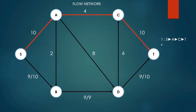Next, we update the flow of each edge in our path in the flow network. For each edge in the path, we represent each edge as the current flow in comparison to the maximum capacity. So, for edge S to A this corresponds to 4 over 10, edge A to C corresponds to 4 over 4, and edge C to T corresponds to 4 over 10.